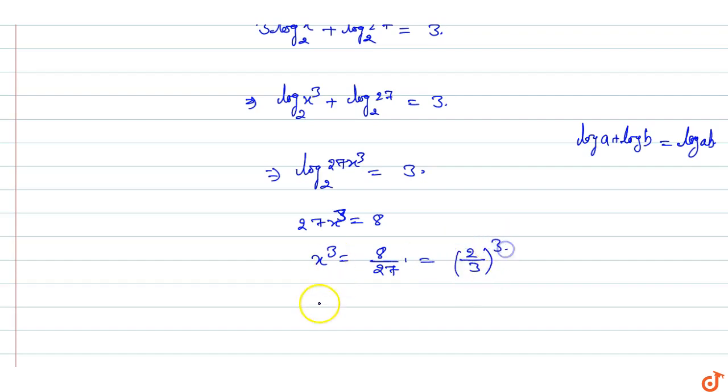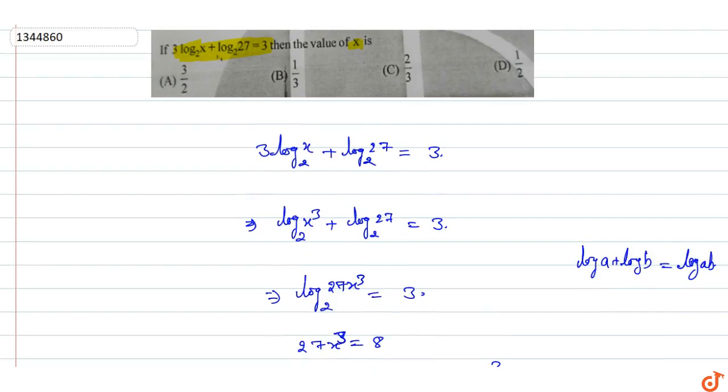This is 2 by 3 whole cube, so x equals 2 by 3. If 3 log x base 2 plus log 27 base 2 is equal to 3, then the value of x is equal to 2 by 3, which means option C will be the correct option. So this is the answer for this question.